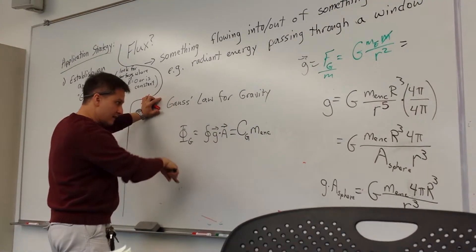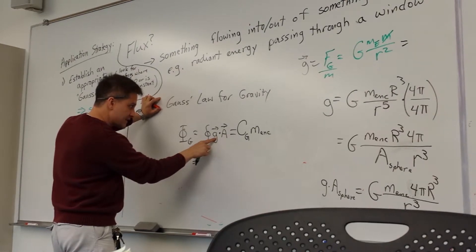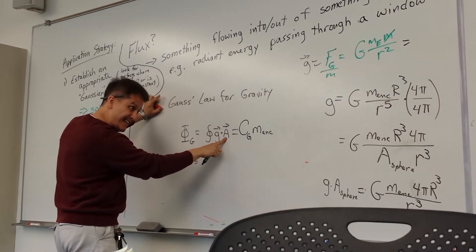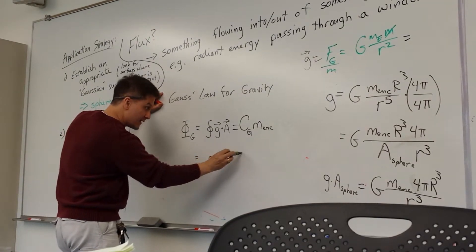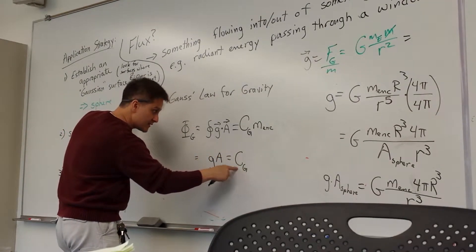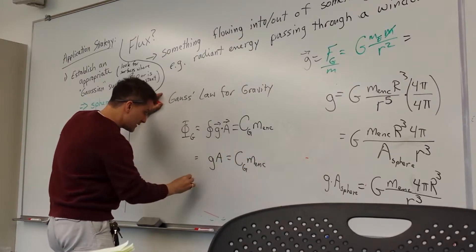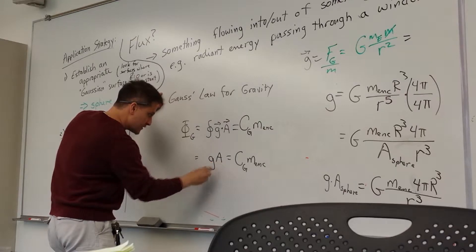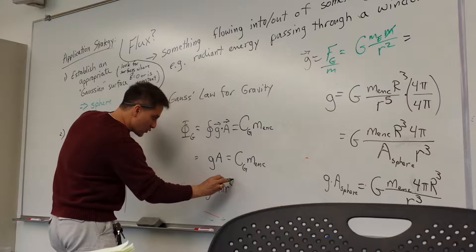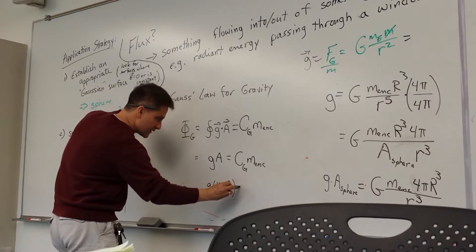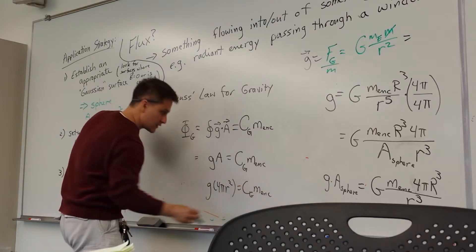So if we lay this out, then constant G over any dA in any particular area. So we can say this is G times A is equal to this constant, whatever it is, times the mass enclosed, or G times 4πR² is equal to this big C times mass enclosed.